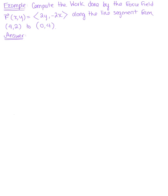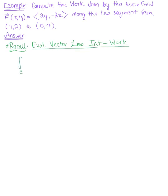Compute the work done by the force field defined by vector F with components 2y, negative 2x along the line segment from (0,4,2) to (0,0,4). To get us started, we want to recall evaluating vector line integrals specifically related to work. We have the vector line integral over curve C of the vector field dotted with the differential dr, equivalent to the integral from point A to point B of the parametrized vector field dotted with the tangent vector dT.